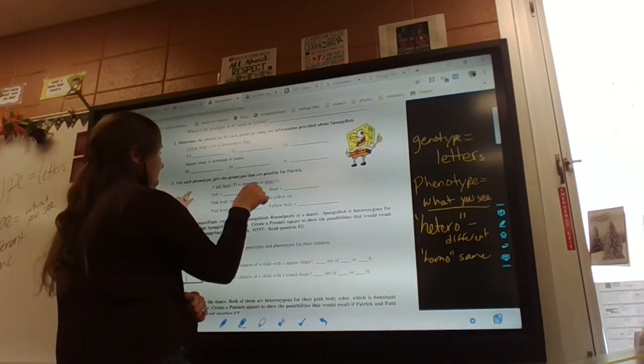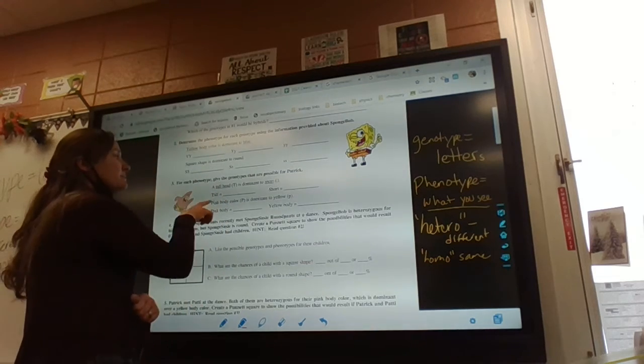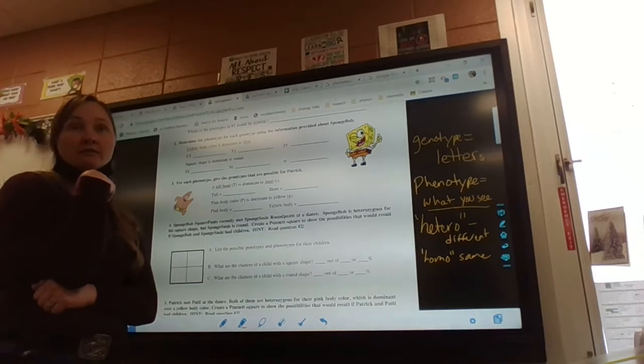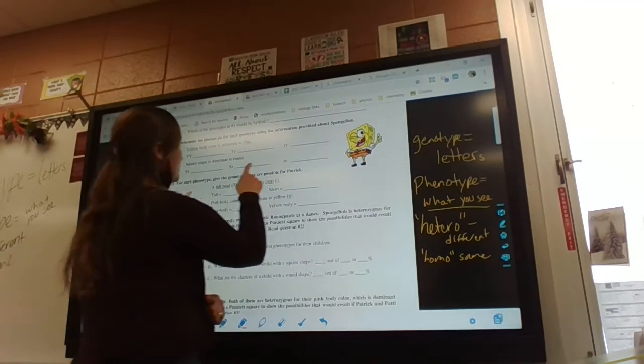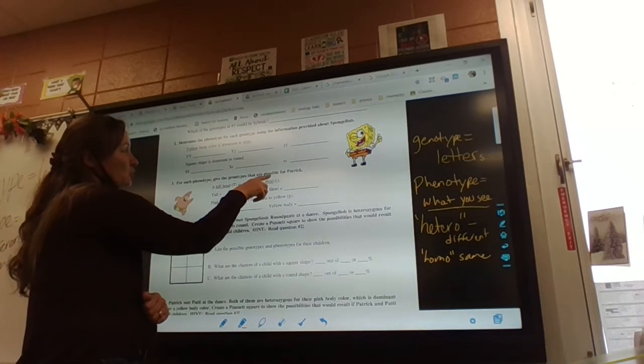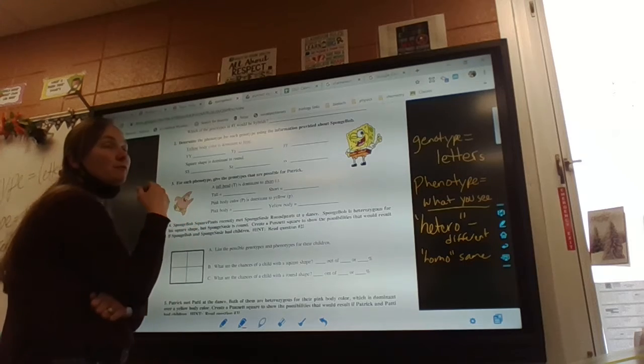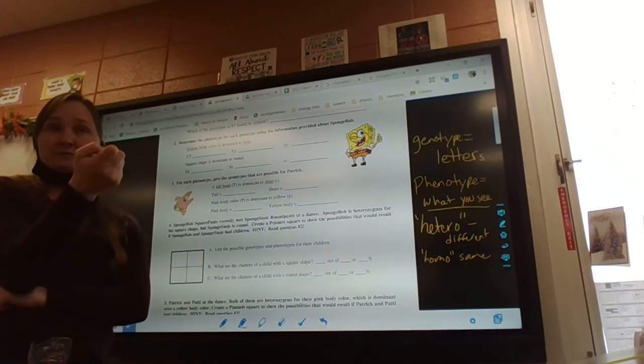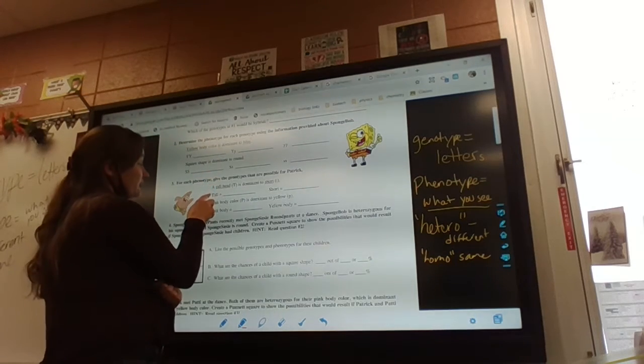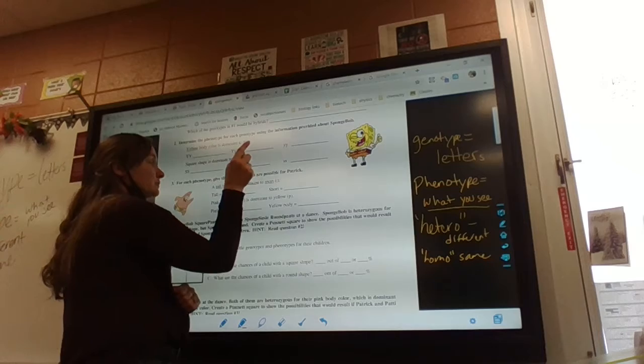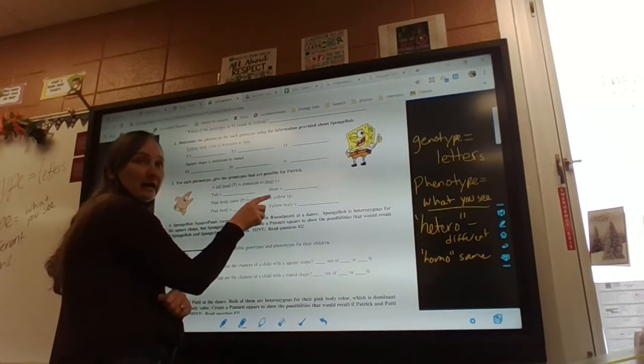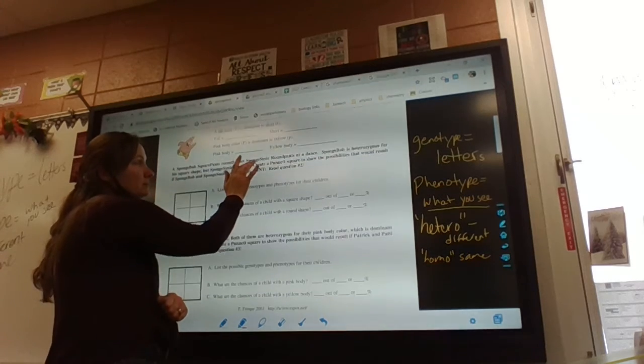On this one, they tell you the phenotype but you have to give the genotypes possible. There can be more than one. The genotypes are the letters, so you have to figure out: a tall head, capital T, is dominant to a short, little t. You have to remember that there's two letters in every genotype. So tall, there's two ways to be tall and there's only one way to be short. Same thing for pink or yellow bodies. When you get to these questions, you're going to use this up here to help you answer.